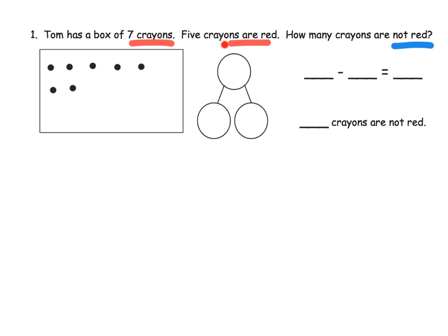And then it says five crayons are red. So let's highlight that. So five crayons are red, and the rest are not red. So the answer, of course, we can see is two because five of them are red. The remainder are not red. So it's two.